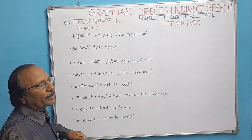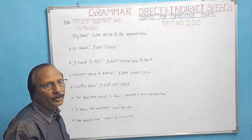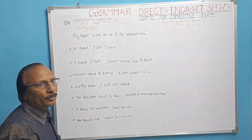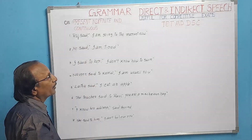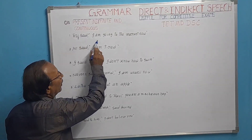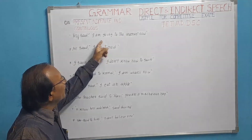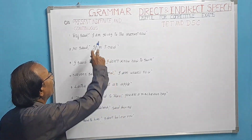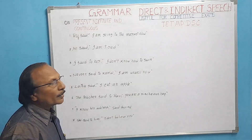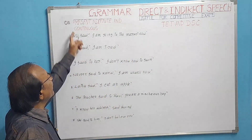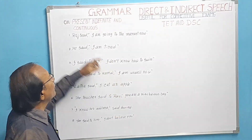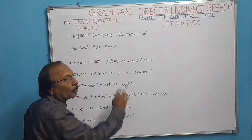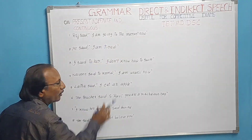Let us go into the topic. Observe the sentences and identify what tense they are in. The heading is: Present Indefinite and Continuous. If you observe the first sentence you will have some idea. Raj said, 'I am going to the market now.' You may think this is not indefinite. To give you an idea, I have written the first sentence in present continuous tense. The remaining sentences are all present indefinite.